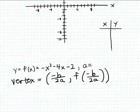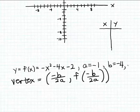For this particular quadratic function, the leading coefficient a — the coefficient of x² — is -1. The second coefficient b, which is the coefficient of the x term, is -4. And the constant coefficient c is +2.